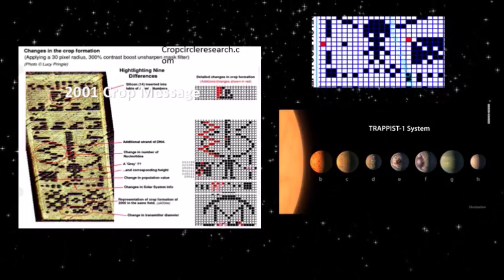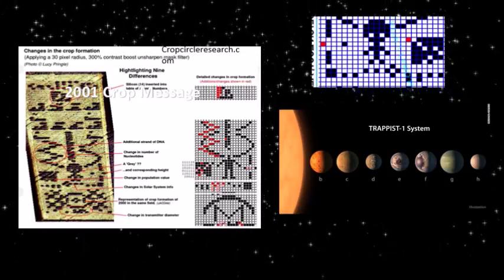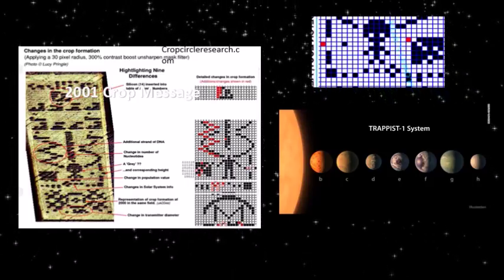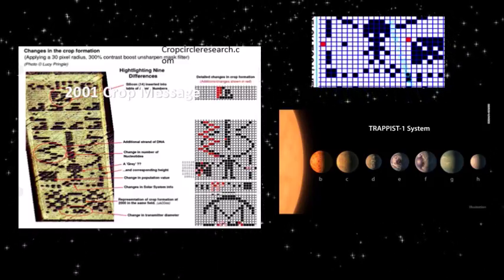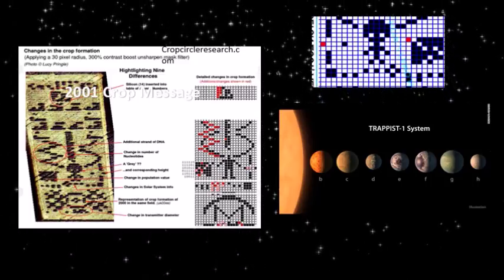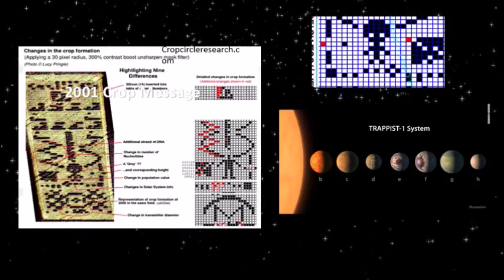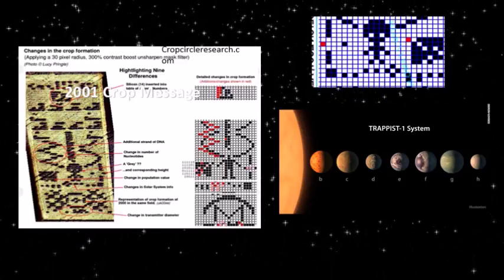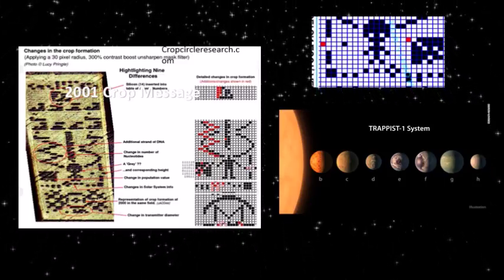Doesn't that sound just like the TRAPPIST-1 solar system we found in 2016? It is a super cool brown dwarf with seven rocky Earth-sized planets. And listen to this. Three of them are in the habitable Goldilocks zone, and they are only 39.5 light years away. It does not really matter if the crop circle maker is from that solar system, but knowing systems like this exist is encouraging.